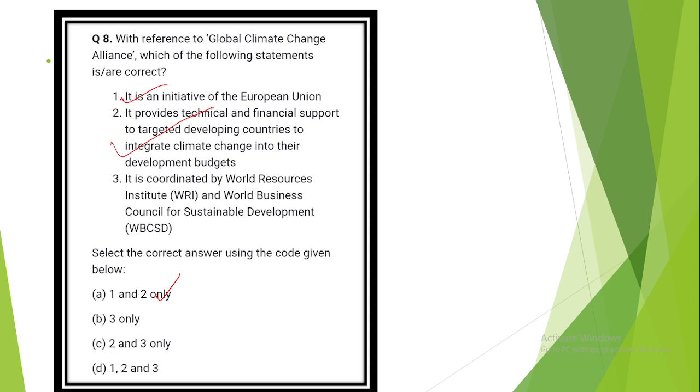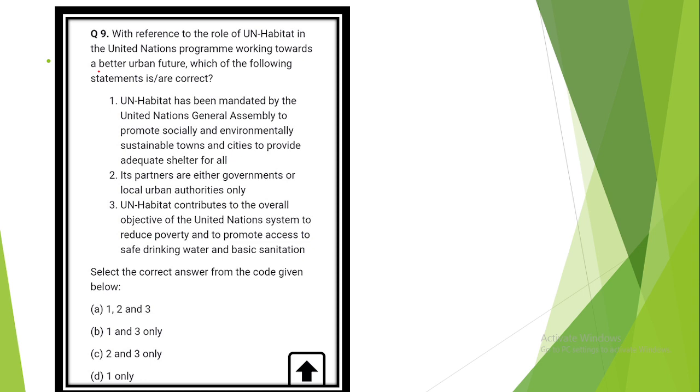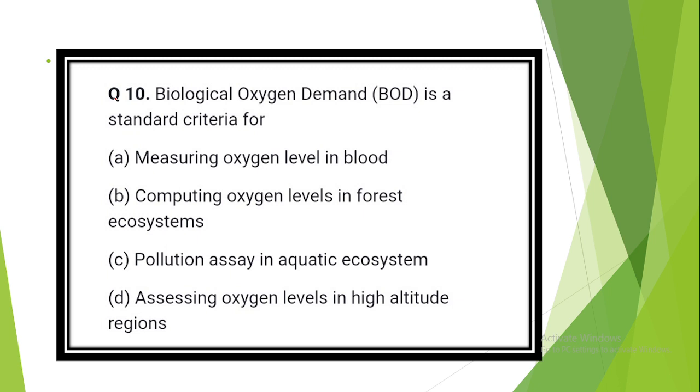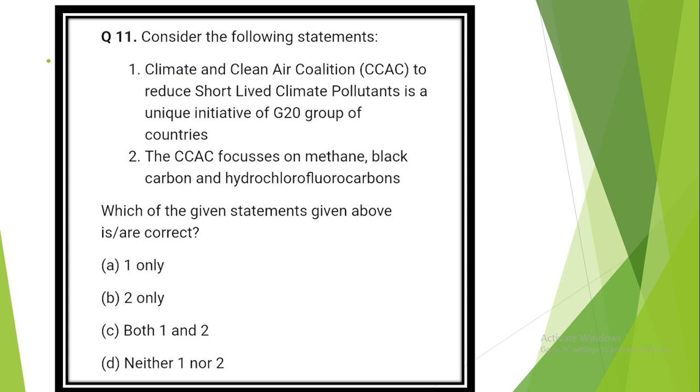Question number 6. Consider the following statements. The answer is option C: Both are correct. Question number 7. In tropical regions, Zika virus disease is transmitted by the same mosquito that transmits dengue. Sexual transmission of Zika virus disease is possible. Question number 7. According to Wildlife Protection Act 1972, which of the following animals cannot be hunted by any person except under some provisions provided by law? The answer is option D: All are correct. Gharial, Indian wild ass, wild buffalo. With reference to Global Climate Change Alliance, which of the following statements are correct? The answer is option A. It is an initiative of the European Union. It provides technical and financial support to targeted developing countries to integrate climate change into their development budgets.